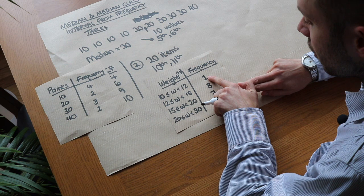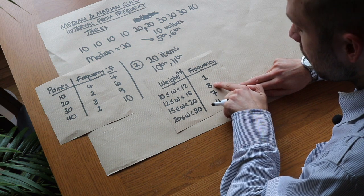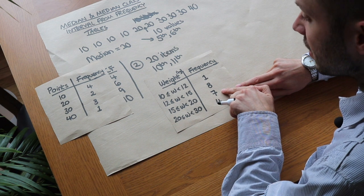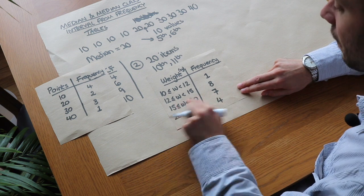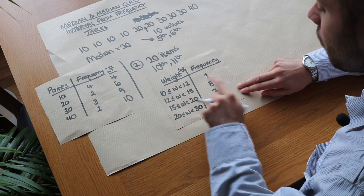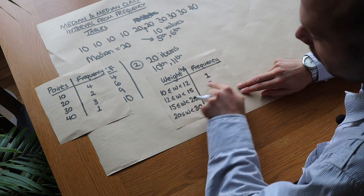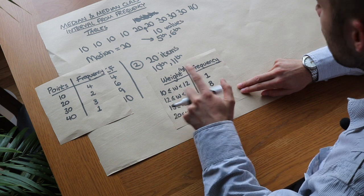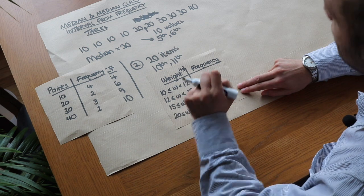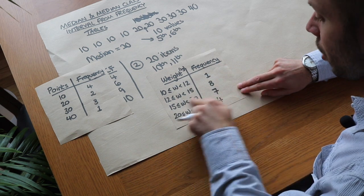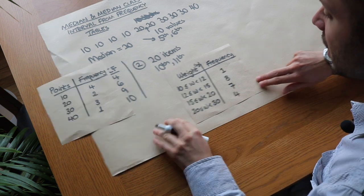Does the tenth value occur within the first one value? No. Does it occur within the first nine values? No. But does it occur within the first sixteen values? Yes — so it lies in this interval. However, this time we can't actually find the median because we don't know the original values. We know one person had a weight between 10 and 12 kg, eight people had a weight between 12 and 15 kg, but we don't know the exact weights. So we can't work out the median.